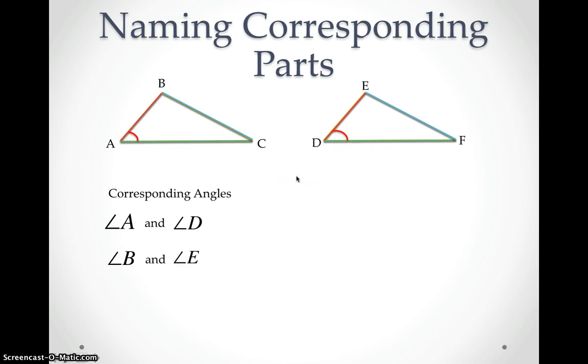Angle B and angle E are corresponding angles. Now, because we used one of these lines here, I have to use two to show my next set of corresponding angles. And finally, angle C and angle F are corresponding angles.